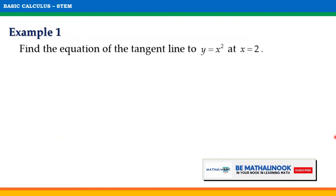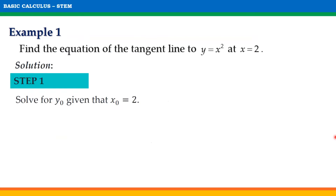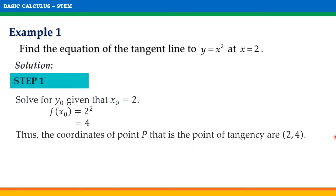Let us have this first example. Find the equation of the tangent line to y equals x squared at x equals 2. To solve for the slope, we need to first find y sub 0 by substituting the given value of x into the function. The resulting coordinates will be the coordinates of point P, the point of tangency. Since x sub 0 equals 2, then f of x sub 0 equals 2 squared equals 4. Therefore y sub 0 equals 4, and the coordinates of point P are (2, 4).